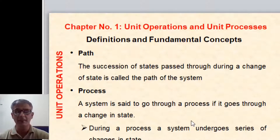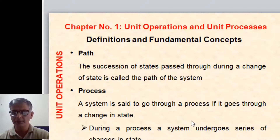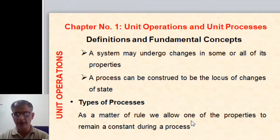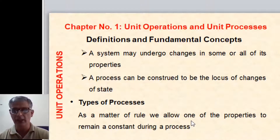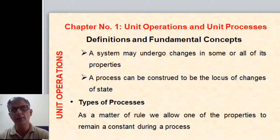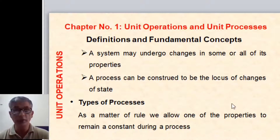It is not just a single change — multiple changes occur in steps. The system may undergo changes in some or all of its properties. Sometimes there is a change in only one property during a change of state, and even then we can say some process has occurred. A process can be construed to be the locus of changes of state through which the system has passed — that describes the path.